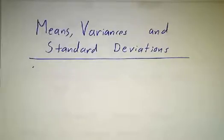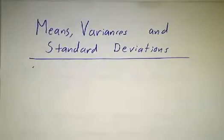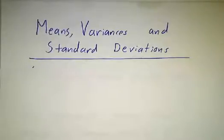In the last video, we talked about what continuous random variables are and how they're described by probability density functions. In this video, we're going to talk about what you can do with those probability density functions and how you can use them to figure out average values and the widths of distributions.